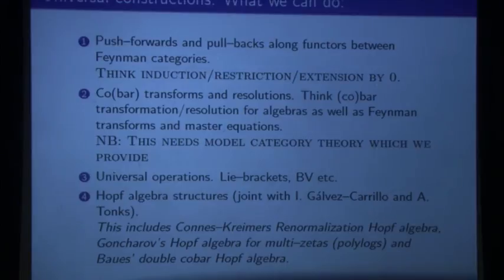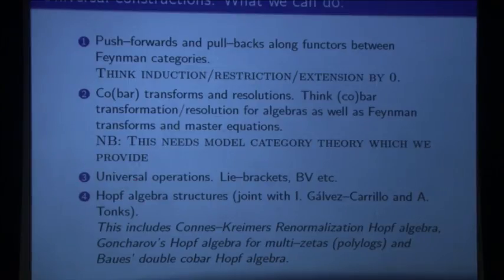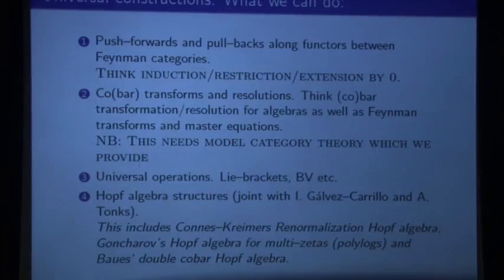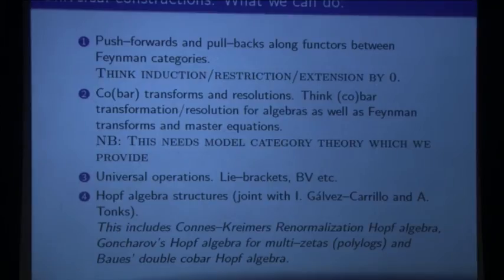And then there's something really surprising — joint work which we're currently writing up with Galvez-Carillo and Tonks. You can actually get a Hopf algebra from one of these Feynman categories. The Hopf algebras you get — for instance for the surjection one, up to a twist — is the one Goncharov has for multi-zeta values. This simple surjection example gives you a Hopf algebra, and that Hopf algebra tells you that every simplicial object has this Hopf algebra structure. It's really cute.